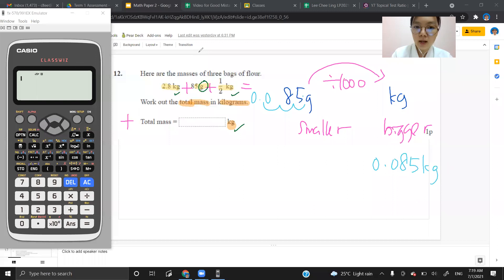So with this, I just plus everything into the calculator. 2.8 plus 0.085 plus half. Let me press a fraction. 1. Pressing down. 2.